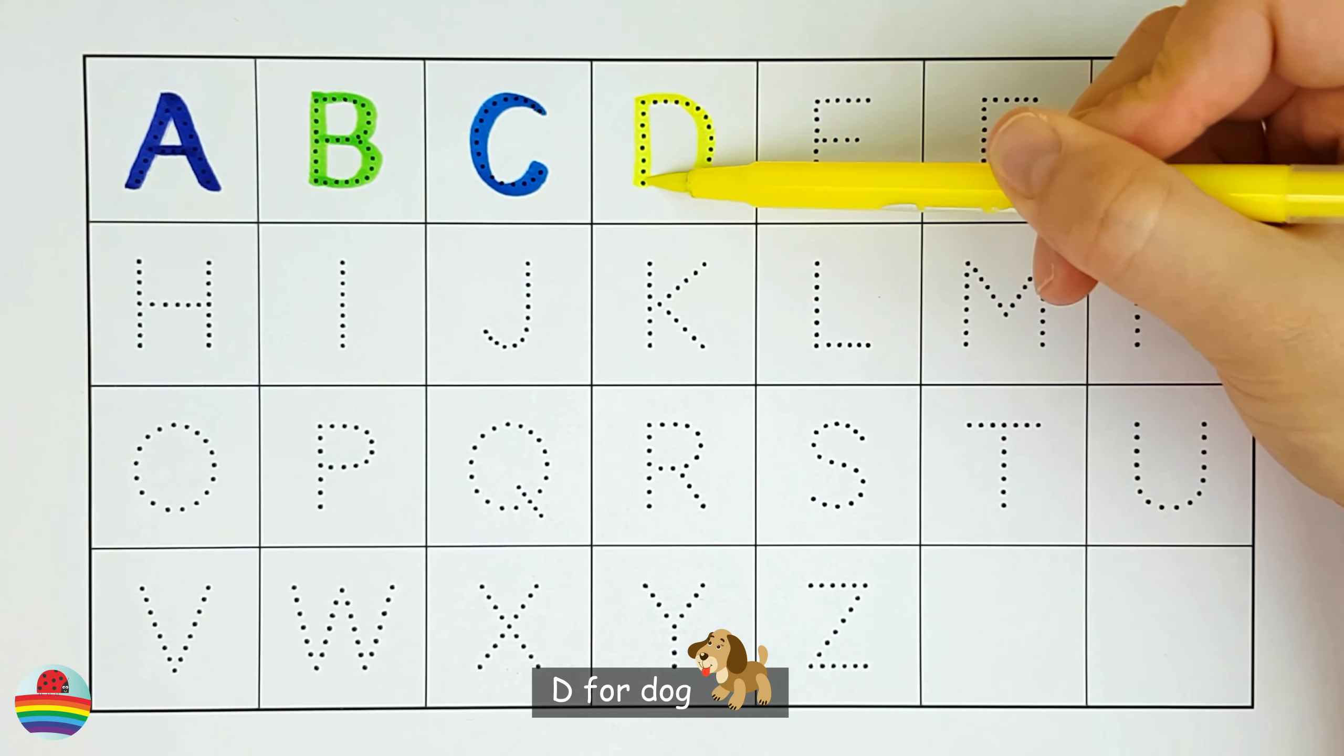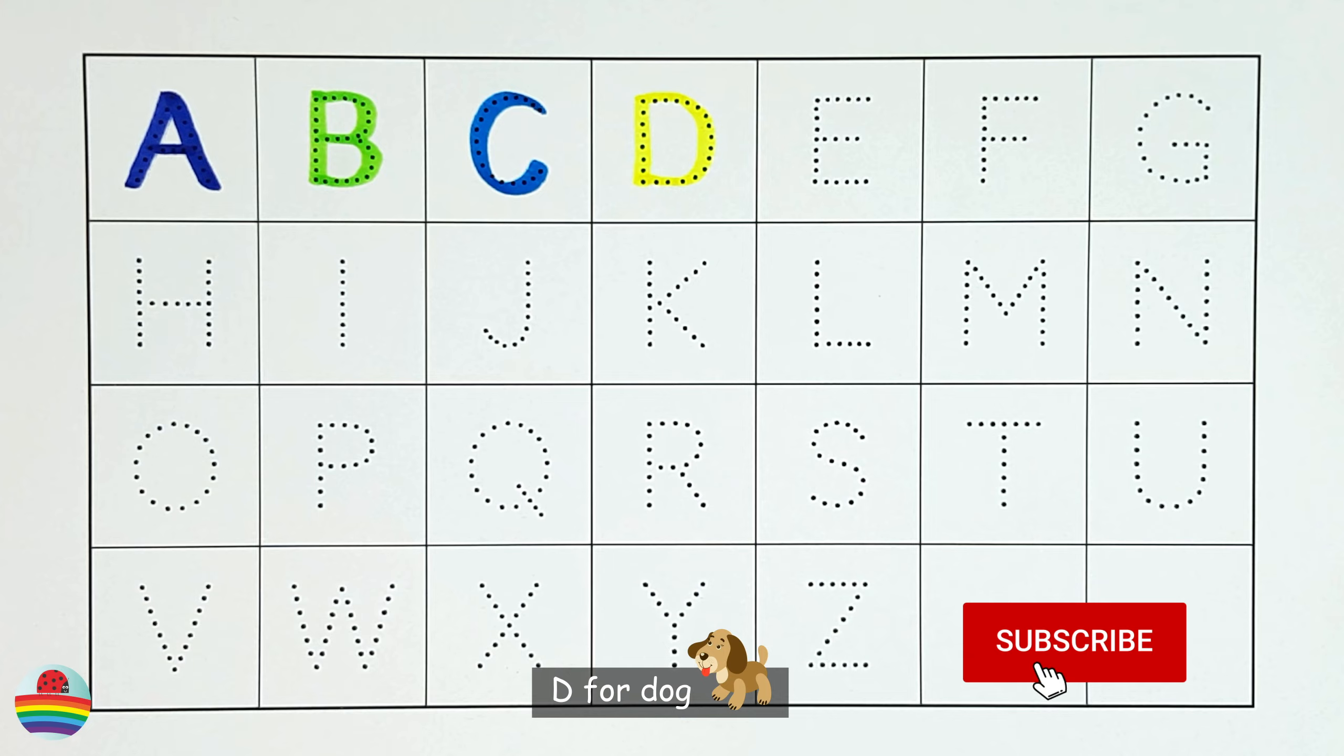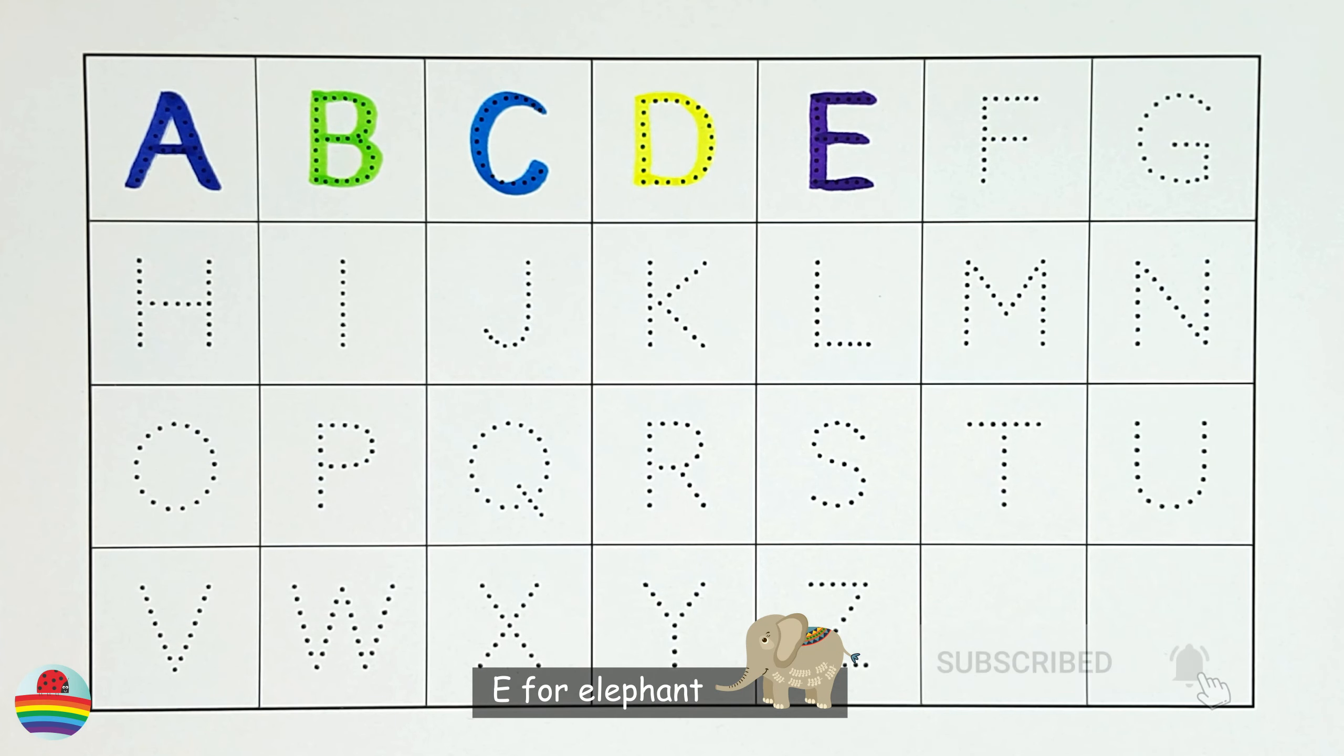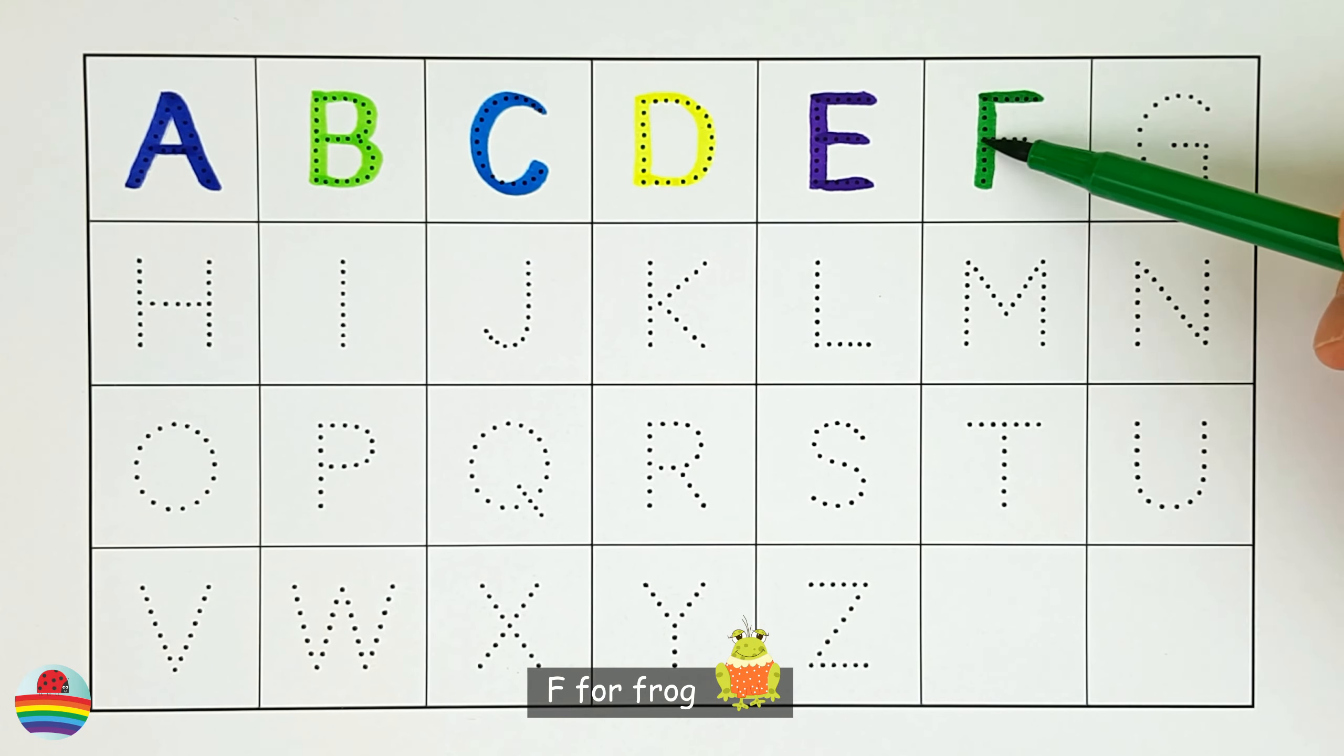D. D for dog. E. E for elephant. F. F for frog.